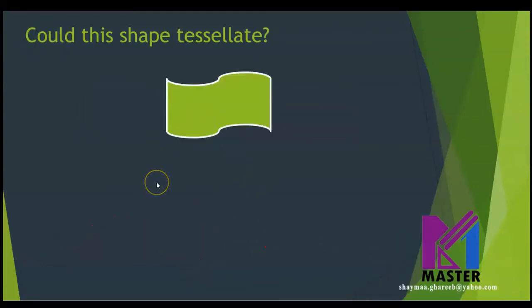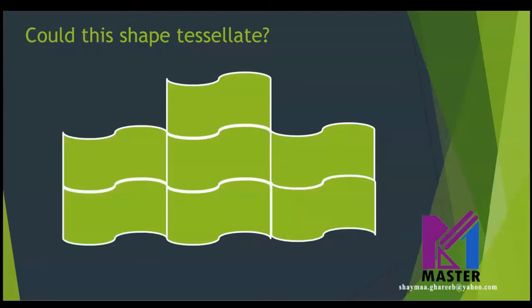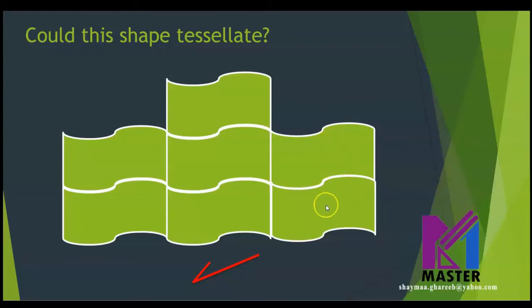Now look at this shape — it has curves. We used to say that shapes with curves do not tessellate. But let's try this one. No gaps or overlaps, so it can tessellate. Not all shapes with curves fail to tessellate — some of them can, because this curve here fits with the curve down here. You have to imagine the shape and think: could it tessellate or not?